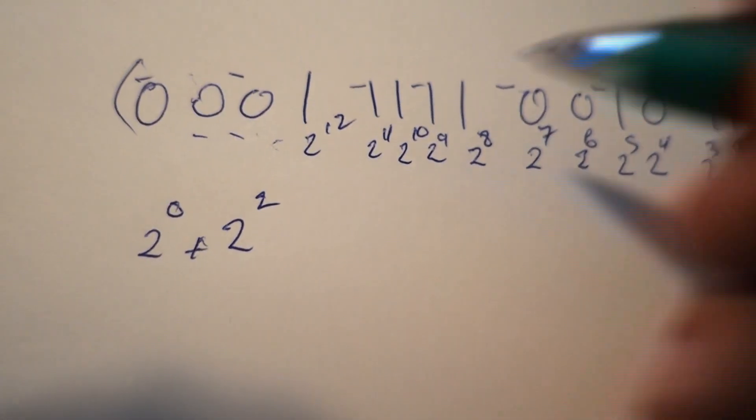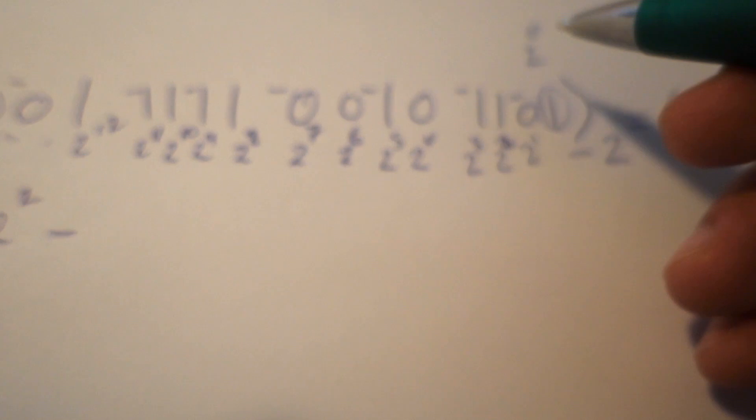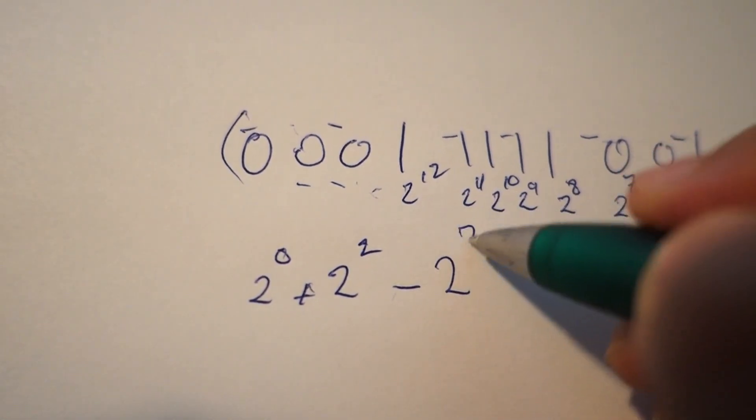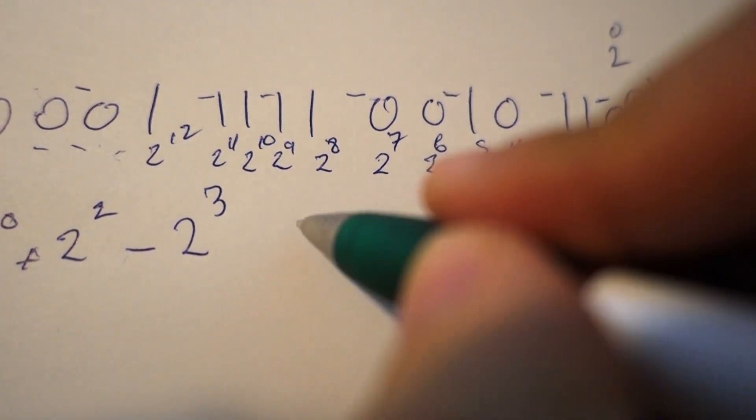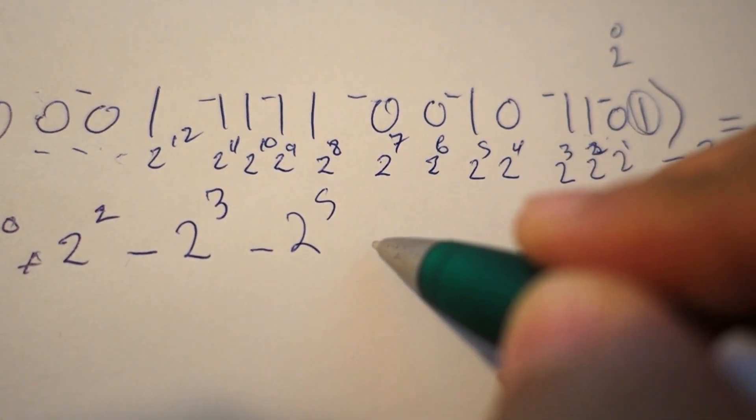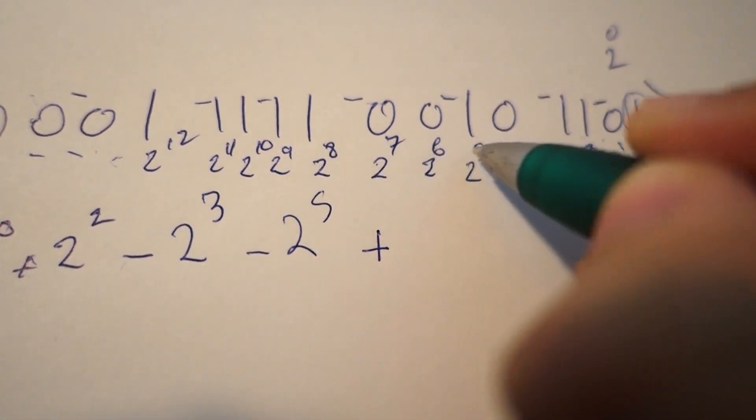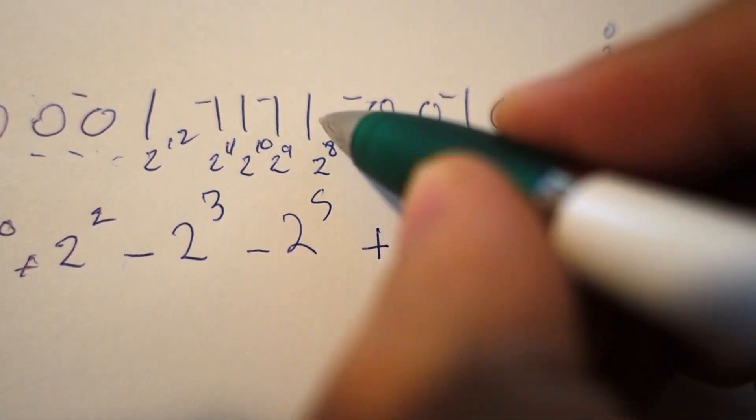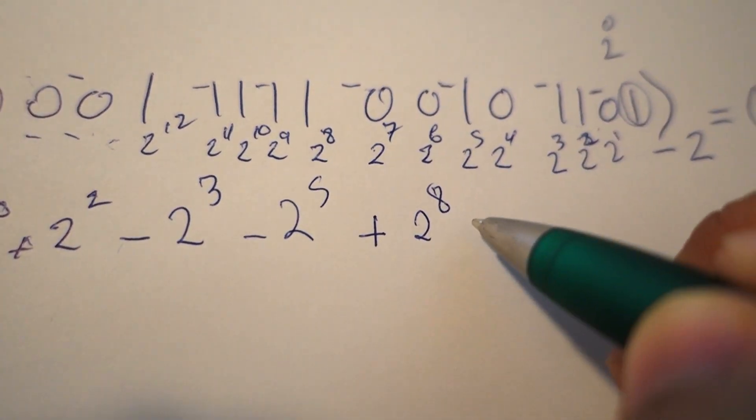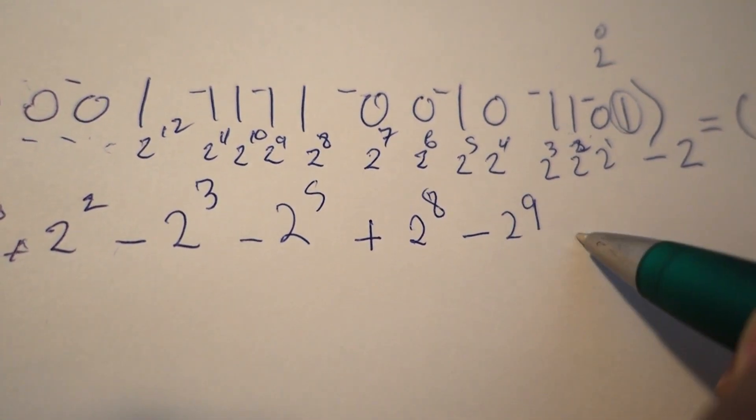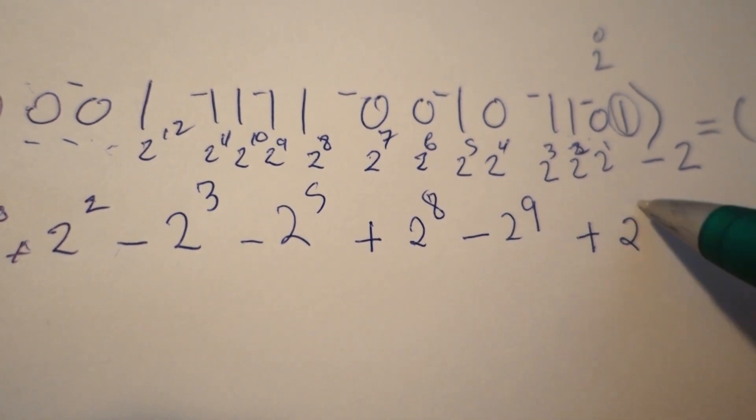We add 2^12, then subtract 2^3 because we have a negative sign there, then subtract 2^5. We skip the positions with zeros. We add 2^8, subtract 2^9, and add 2^10.